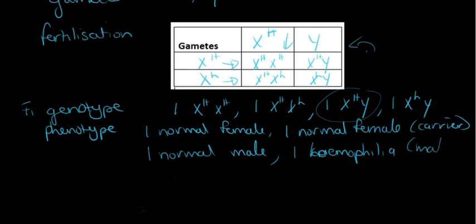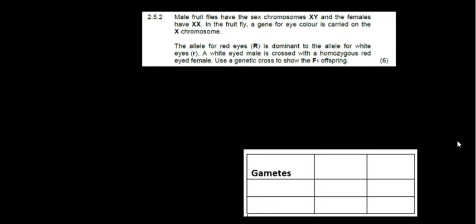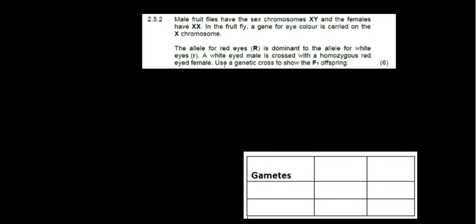So there we go. I think I've got one more example that I wanted to show you guys. Okay, so with sex-linked disorders or sex-linked inheritance, they're not always going to ask you about hemophilia or color blindness. In this question from an old exam paper they used fruit flies. Male fruit flies have the sex chromosomes XY and the females have XX. In the fruit fly, a gene for eye color is carried on the X chromosome. The allele for red eyes is a capital letter R and that is the dominant allele. For white eyes it is a lowercase r, so that is the recessive.